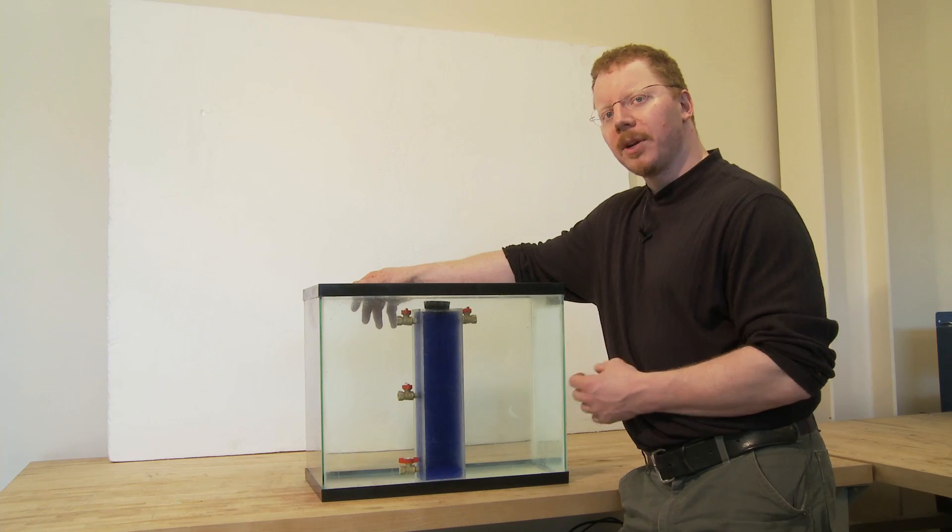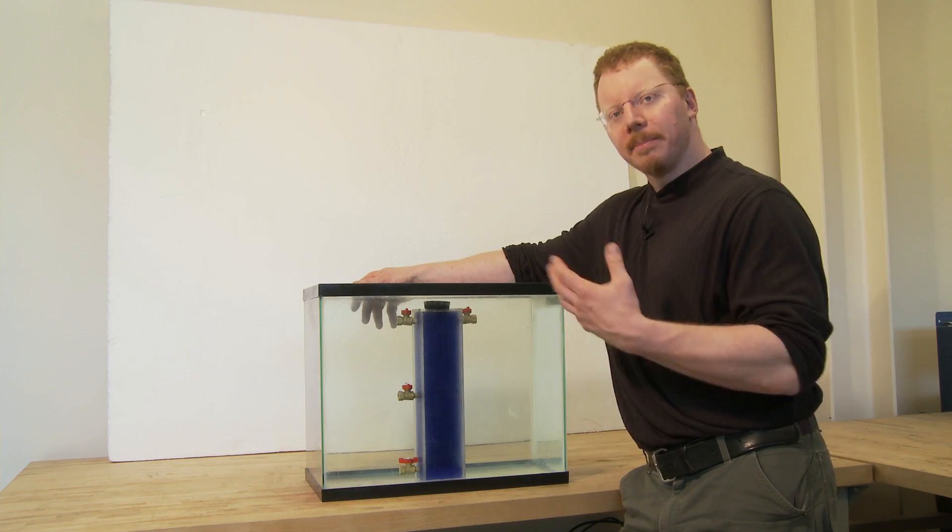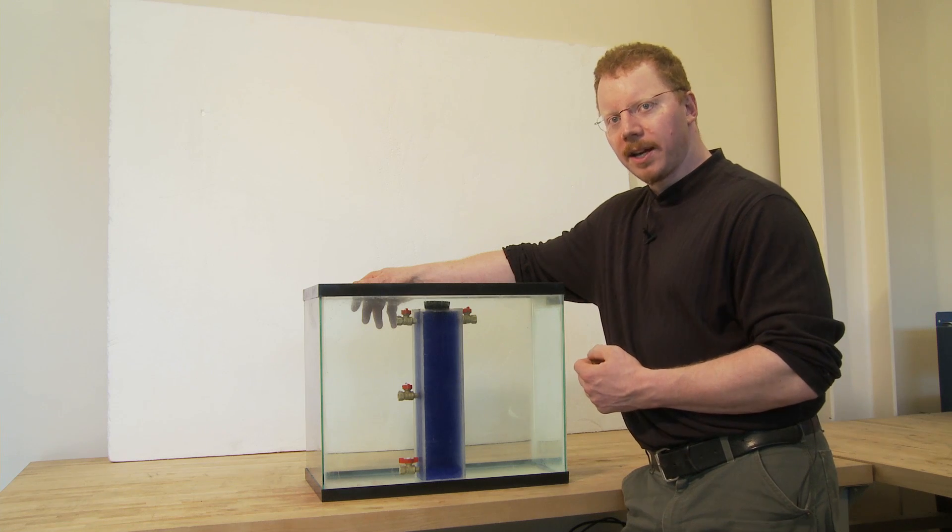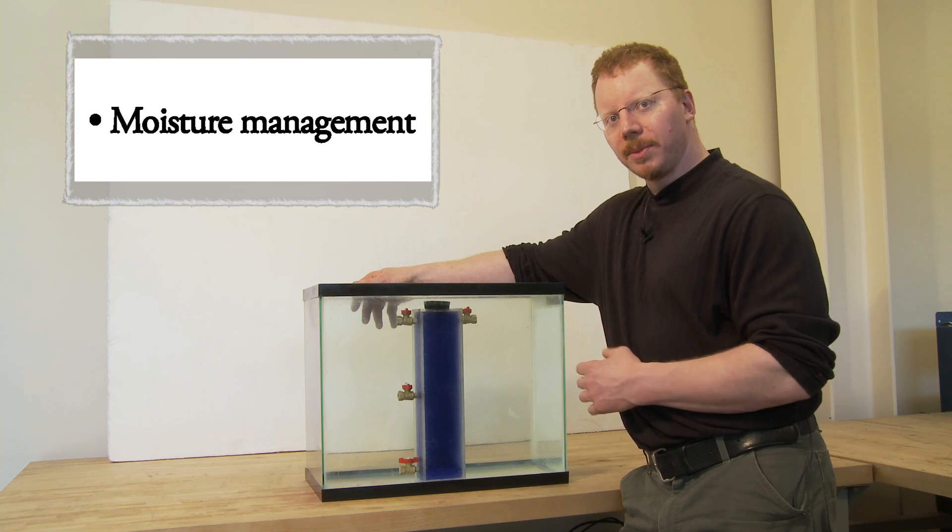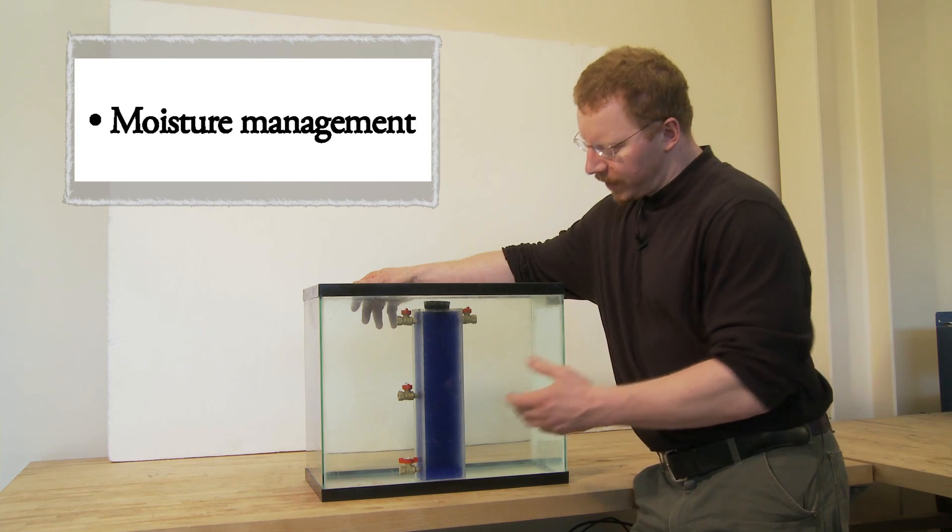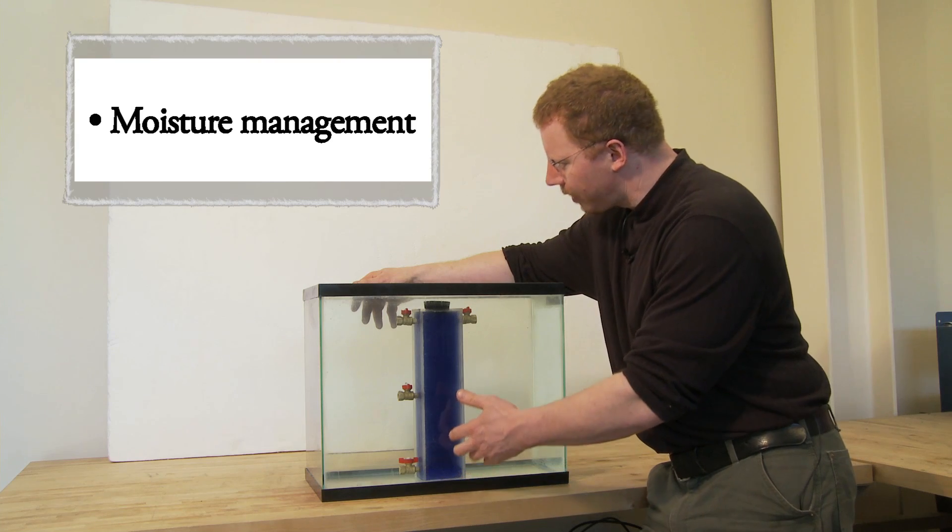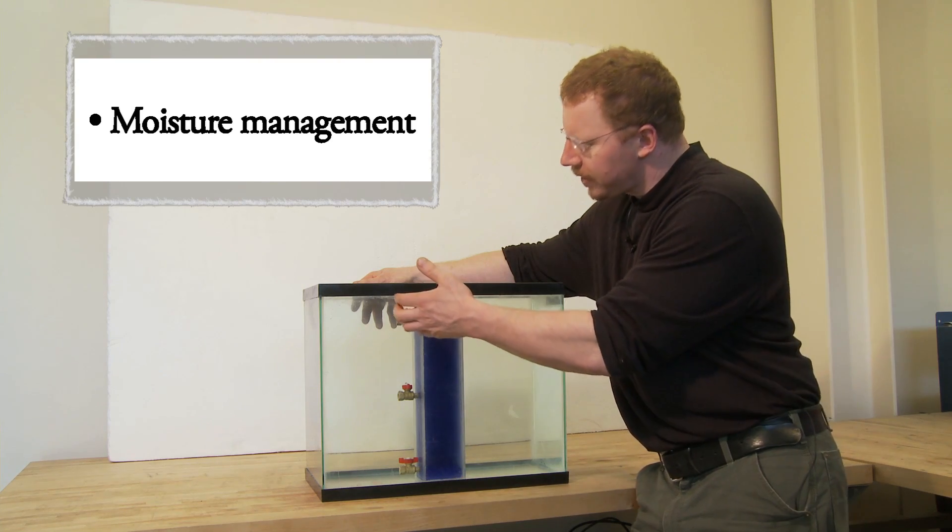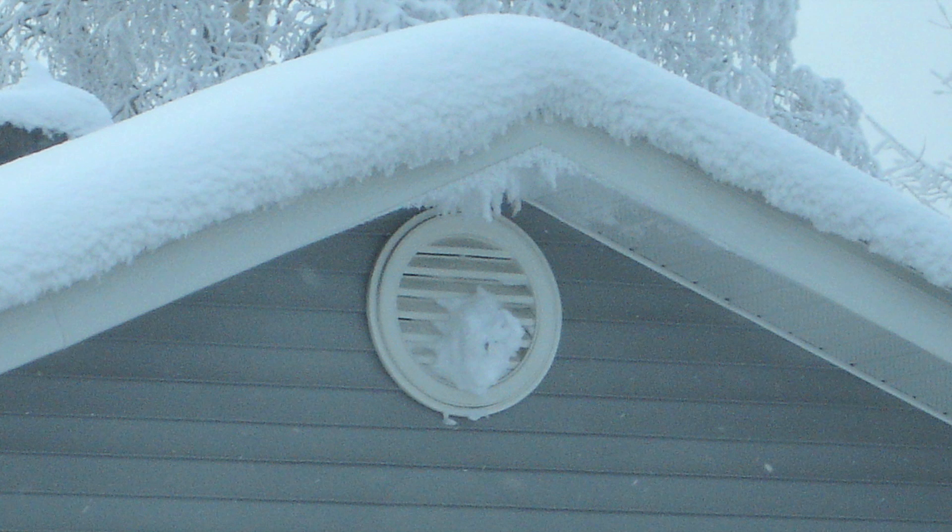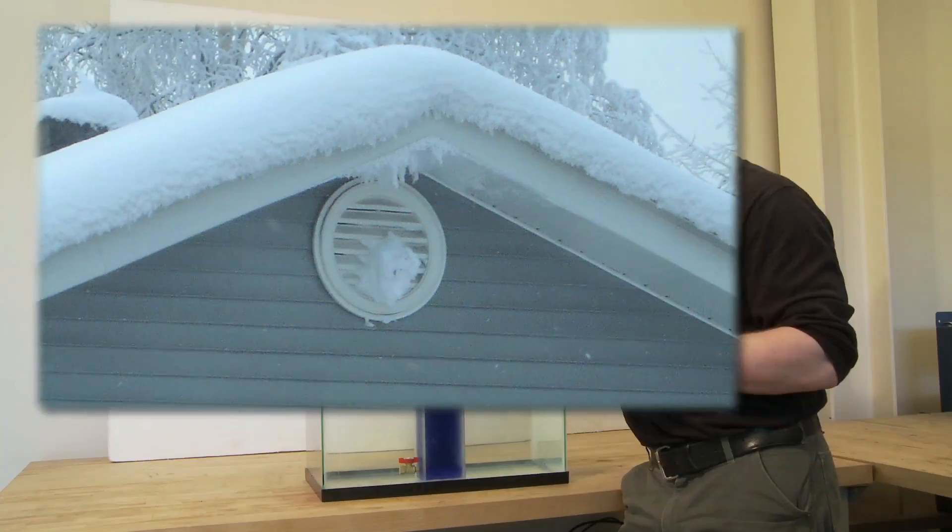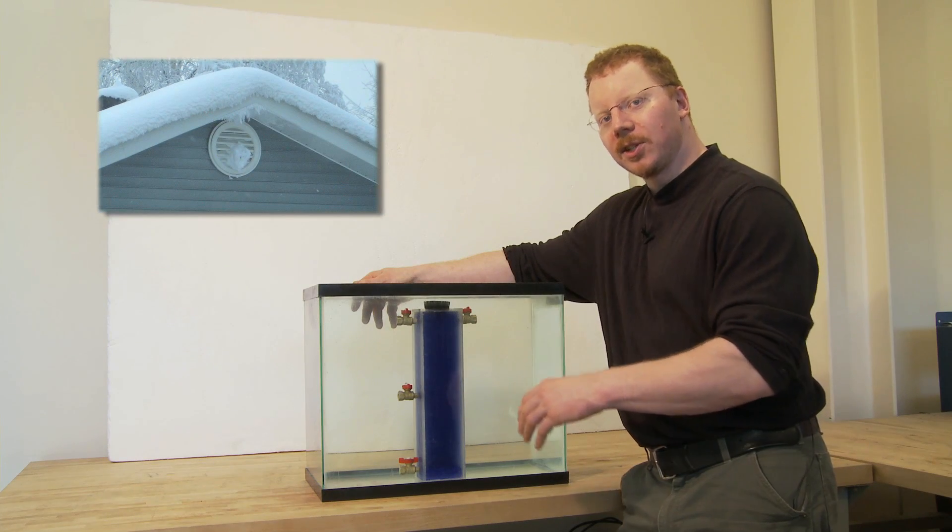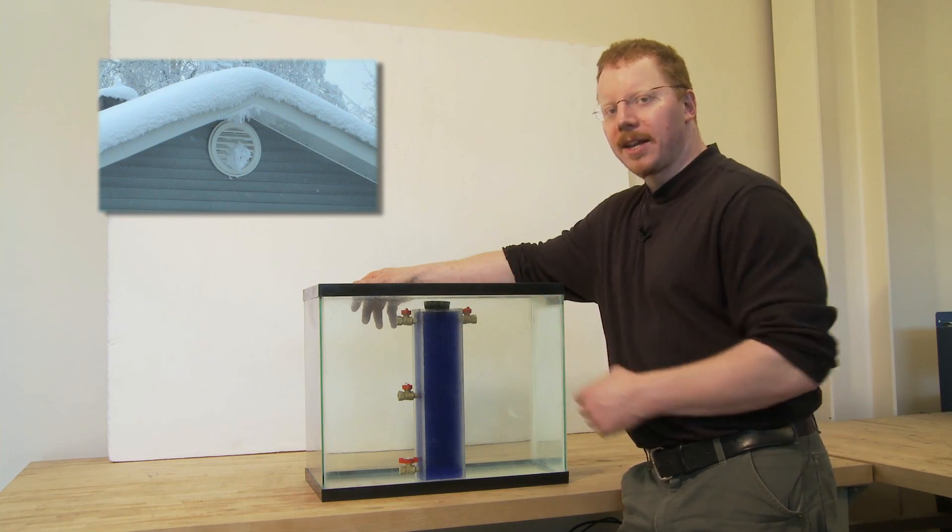All that water vapor that we generate from breathing and showering and cooking and basically living in a house in wintertime, well, that water vapor can travel via air leakage into different parts of the building envelope where we certainly don't want it. And we've demonstrated with stack effect that that hot, buoyant air rises and leaks out up at the top. So if you've ever seen an attic vent in the wintertime with a lot of frost around the outside, well, that's a pretty sure sign that you've got some water vapor traveling via air leakage and stack effect up into your attic. If that water vapor stays up there long enough and becomes trapped, you could have some other problems.